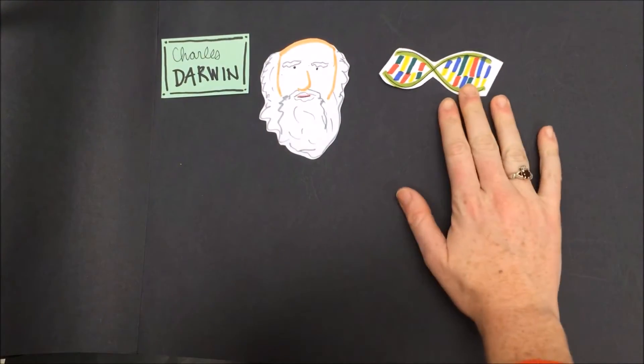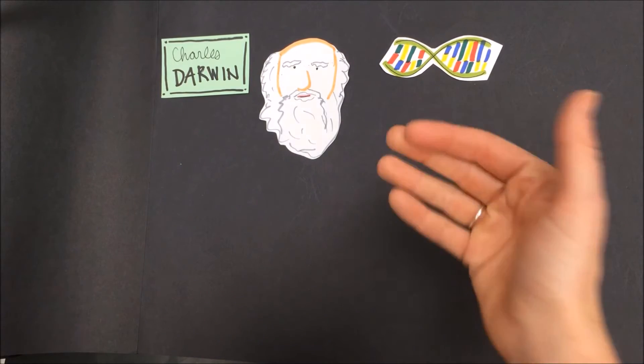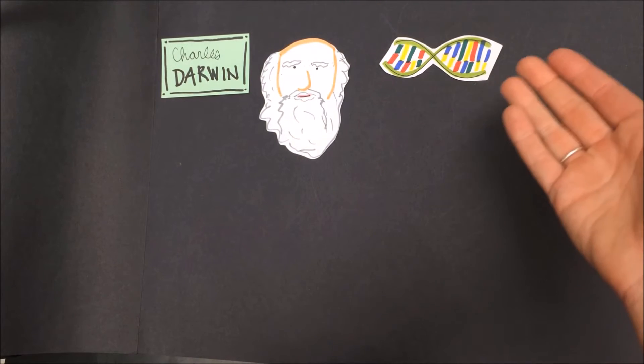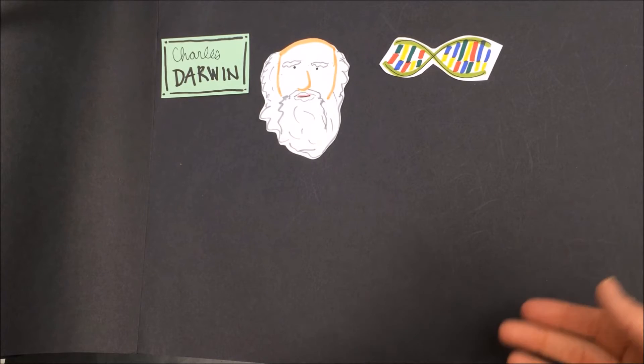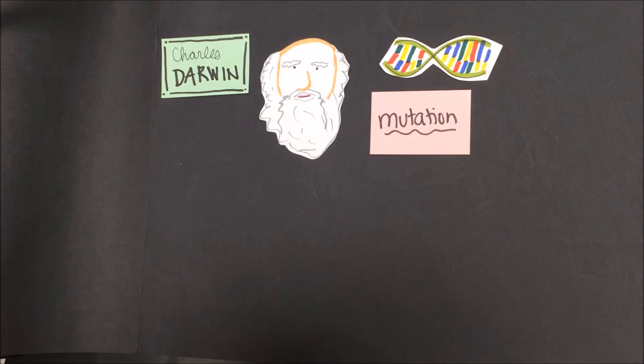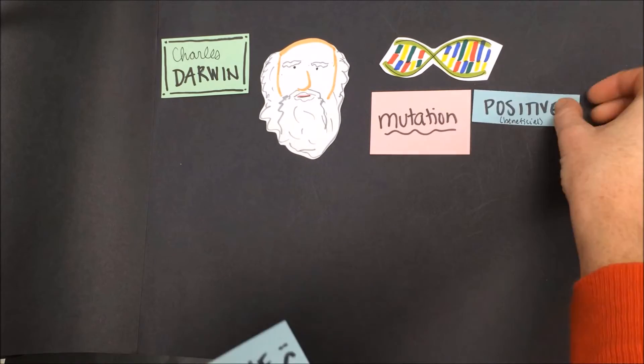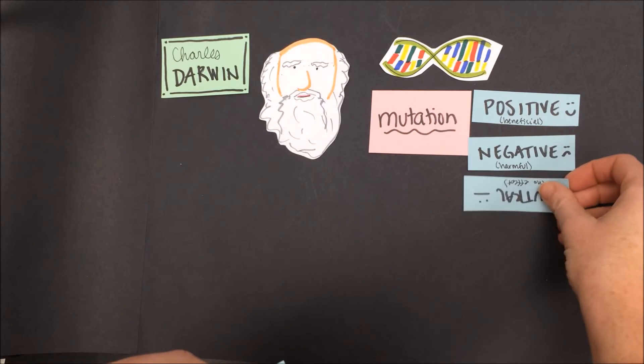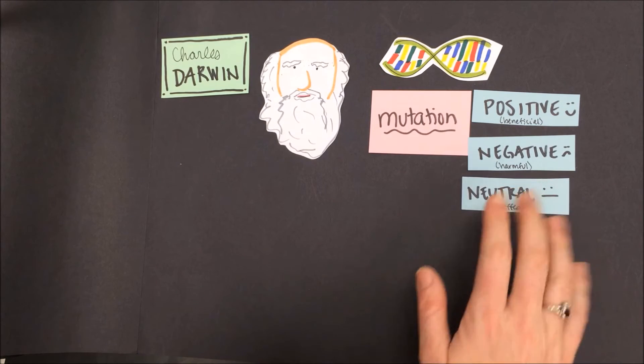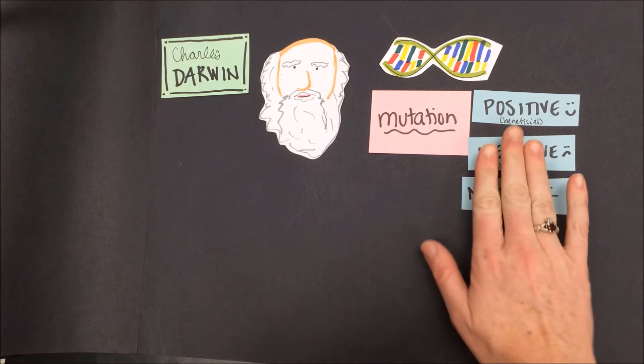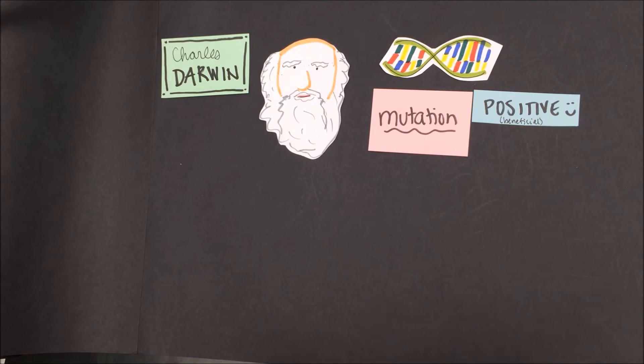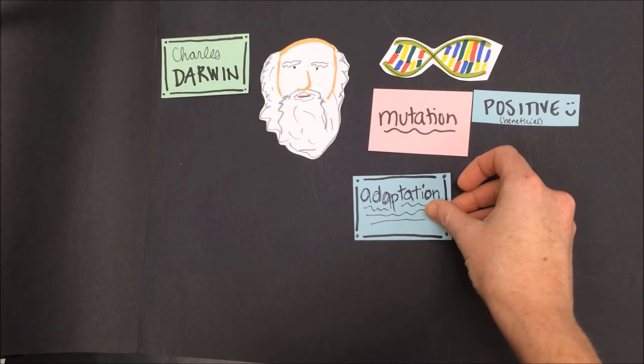Darwin's theory went a little something like this. Although he didn't know about the structure of DNA, he had this concept that there was some kind of material inside of cells that was passed on from generation to generation. He proposed that sometimes changes, we know them today as mutations, occurred in this molecule. These changes might be positive, negative, or neutral, having no effect.